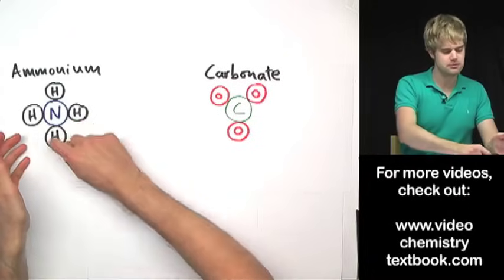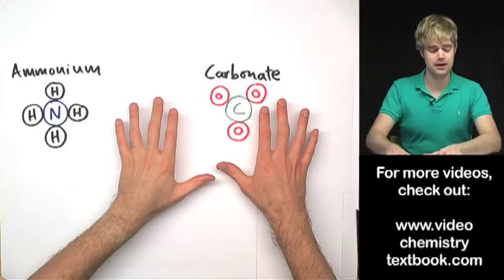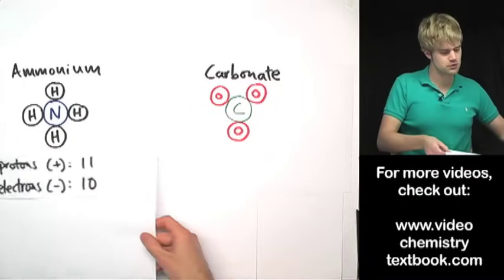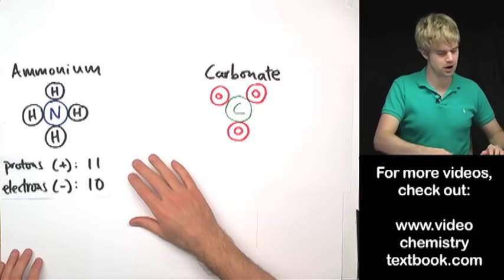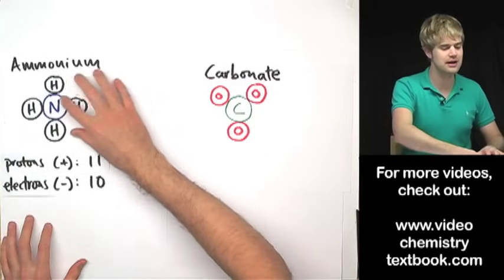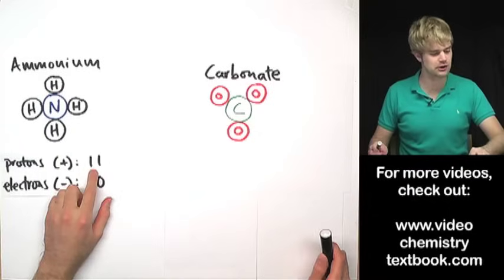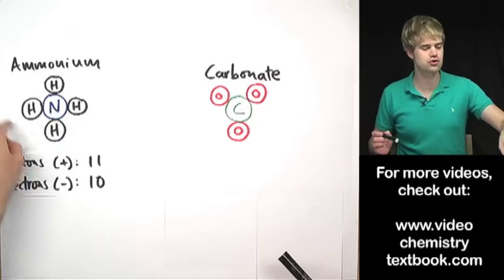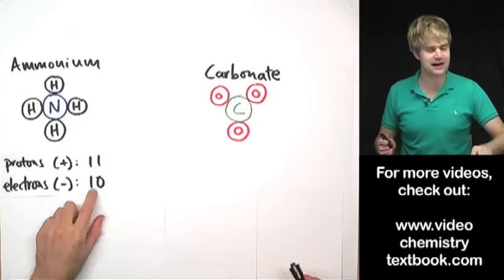Now the atoms that are in each of these polyatomic ions, they have protons and electrons in them. So what we can do for both ammonium and carbonate is we can count up the number of protons that are in each of these atoms. If I do this for ammonium, I get 11 protons. And then if I count up the total number of electrons that are in this whole group, I get 10.